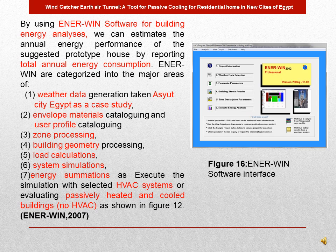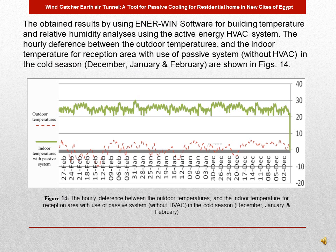Using EnergyWind software for building energy analysis, we can estimate the annual energy performance of the suggested prototype by reporting total annual energy consumption and temperature for each zone. The simulation process involves identifying project information, weather data for the selected Egyptian city case study, economic parameters, building sketch, zoning description for each parameter, and executing energy simulation as an HVAC system or passive action of the system.